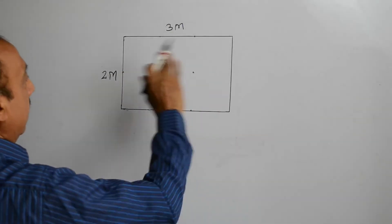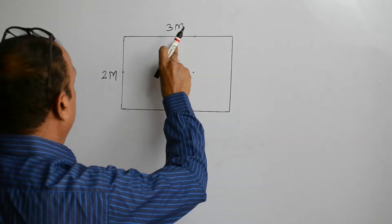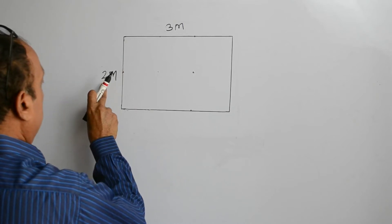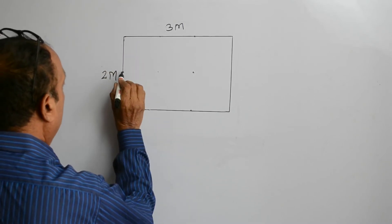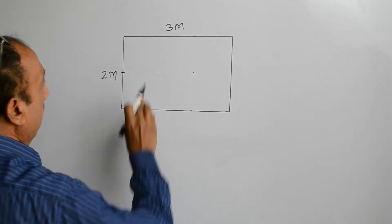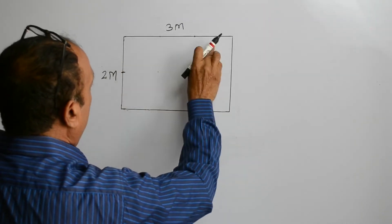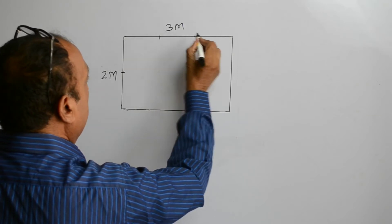This is a rectangle, its length is 3 meters and breadth is 2 meters. So, let us divide these 2 meters in 2 equal parts and also divide these 3 meters in 3 equal parts.